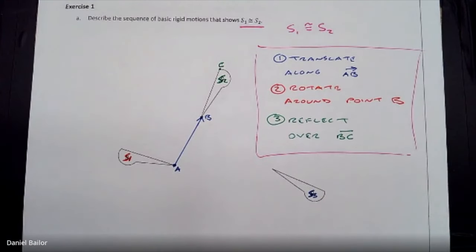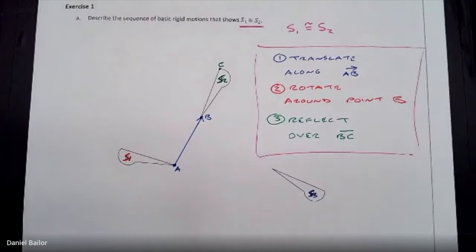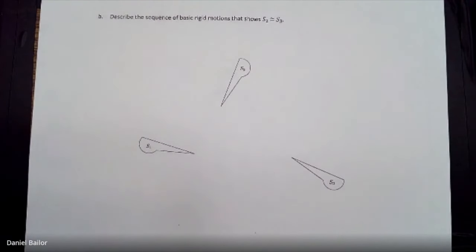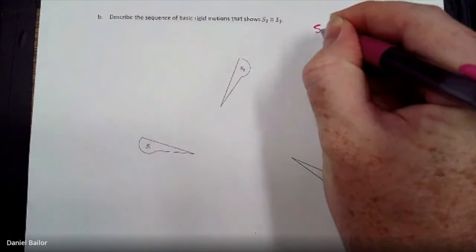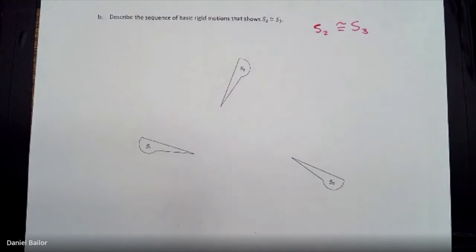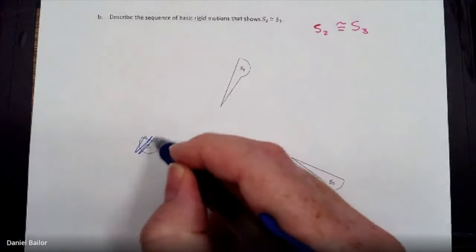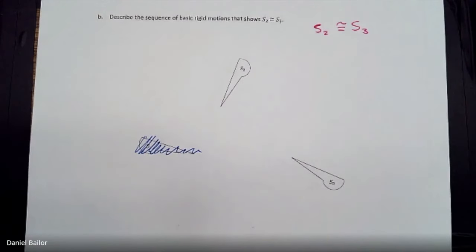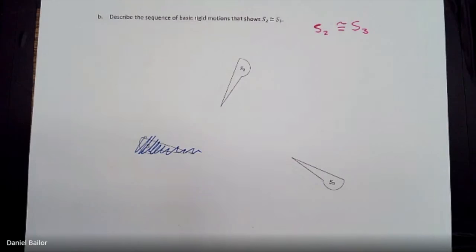On page 116 is the same thing, except this time it's asking you to prove that S2 is congruent with S3. We're going to ignore S1. You just need to prove that S2 and S3 are congruent — tell me what rigid motions will prove that. Pause the video and try your best at part B, then come back and we'll see if your answers match mine.